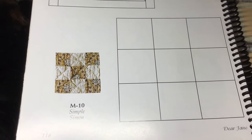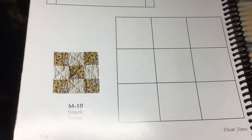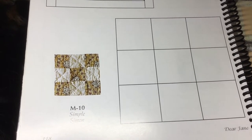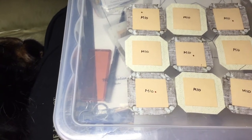Now we're on to M10, and M10 is an extremely simple block. We've got 9 squares with alternating fabrics, so the only trick to this is alternating the fabrics.